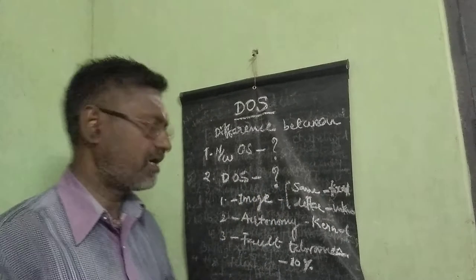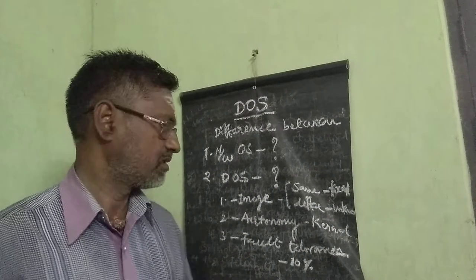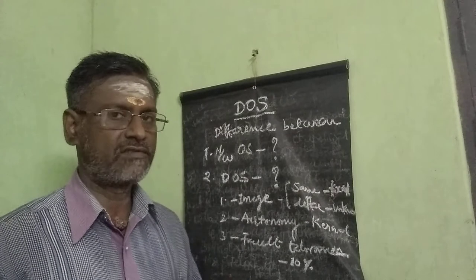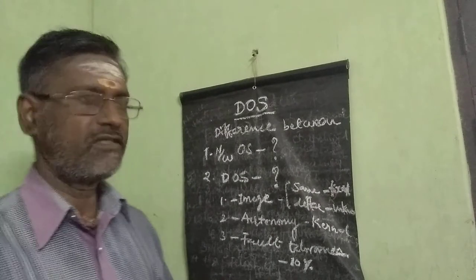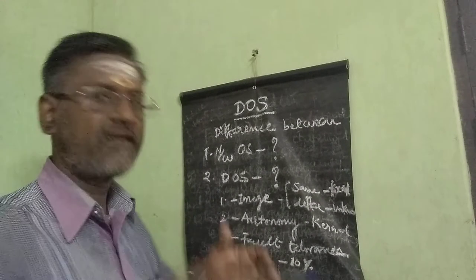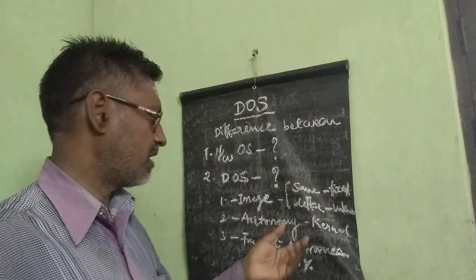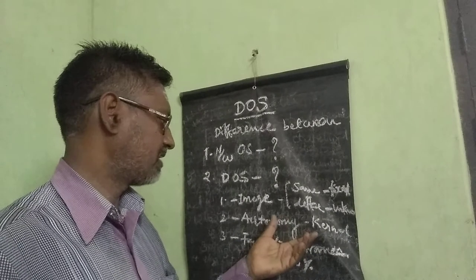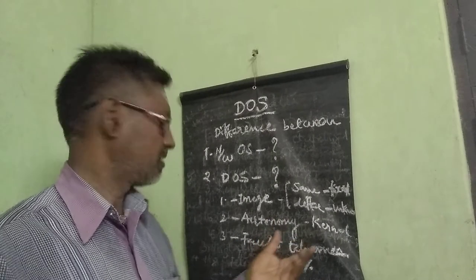Autonomy means the same process uses the same kernel in a Network OS. Same kernel means the same OS. In Distributed OS, different kernels are accessed for the same process — that is called Distributed OS.